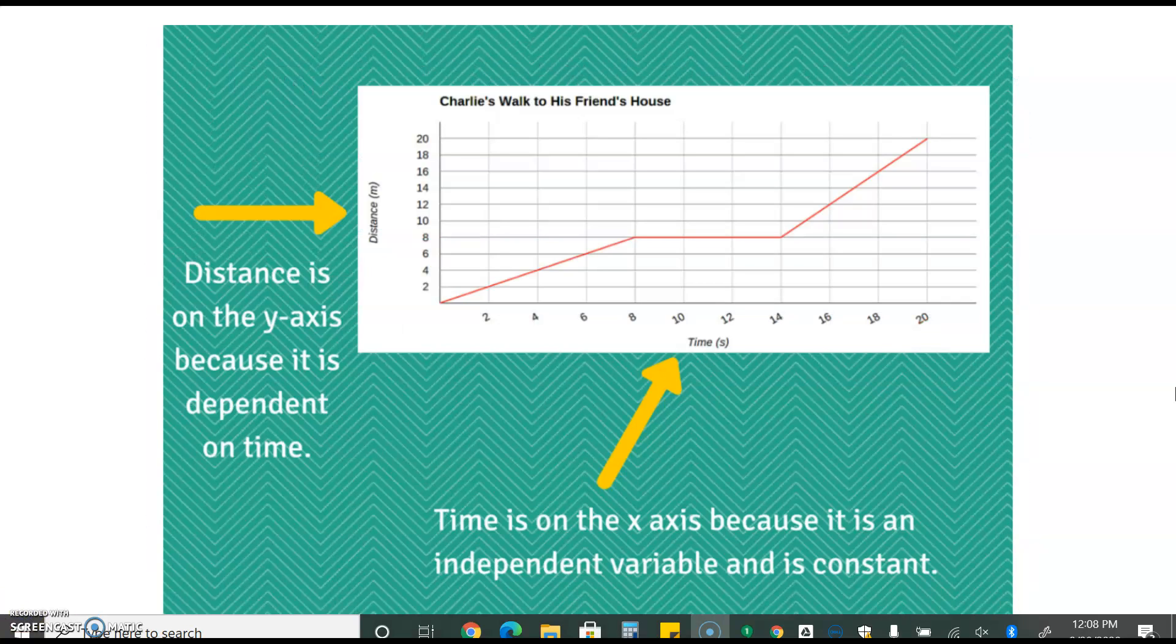On Charlie's walk we already said that our distance is on the y-axis. Our distance will always be on the y-axis because distance depends on time. Our time will always be on the x-axis because it is an independent variable meaning that time does not depend on anything else. Time will keep moving forward no matter what. Time is our constant.